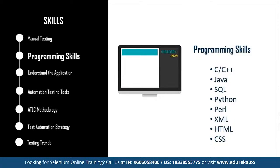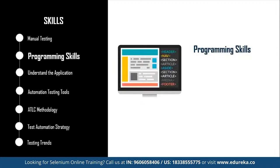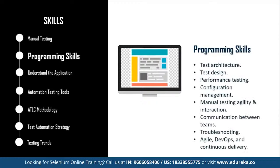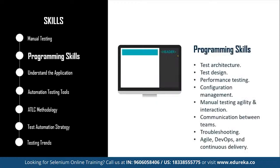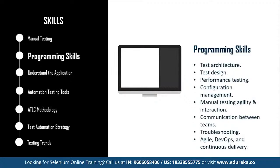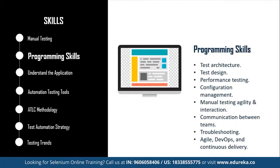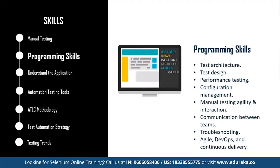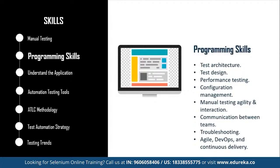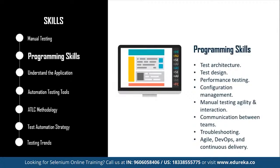There are also a few technical skills a manual tester should master to become a brilliant automation testing engineer, such as test architecture, test design, performance testing, configuration management, manual testing agility and interaction, communication between teams, troubleshooting, agile DevOps, and continuous delivery. The combination of all the above mentioned skills can help you transit to automated testing easily and smoothly.